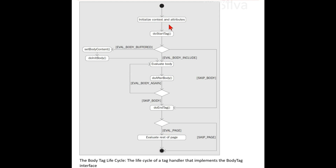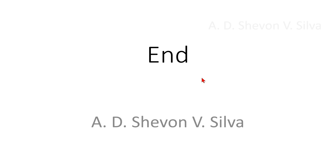In the lifecycle diagram: it starts connected to 'initialize context and attributes' methods, which connects to doStartTag. The doStartTag method connects to setBodyContent via EVAL_BODY_BUFFERED; setBodyContent connects to doInitBody, which connects to EVAL_BODY_INCLUDE. The 'evaluate body' step connects to doAfterBody; doAfterBody loops back via EVAL_BODY_AGAIN, and connects to doEndTag via SKIP_BODY. doStartTag also connects directly to doEndTag via SKIP_BODY. doEndTag connects to 'evaluate rest of the page' via EVAL_PAGE and to the end via SKIP_PAGE.